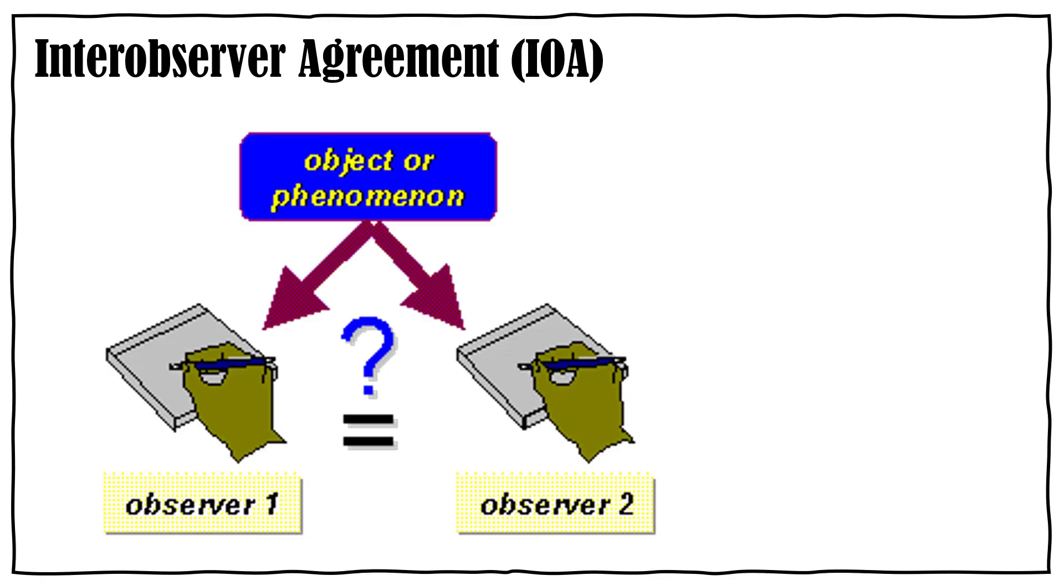Okay, with reliability in behavior analysis we call this interobserver agreement or IOA. So basically you have an object or phenomenon, or a behavior, for example little Annie is dancing, and you're going to have two people independently observe that behavior. I want to stress the word independent. So these two people should not be sitting right next to each other seeing if the other one recorded whether the behavior occurred or did not occur.